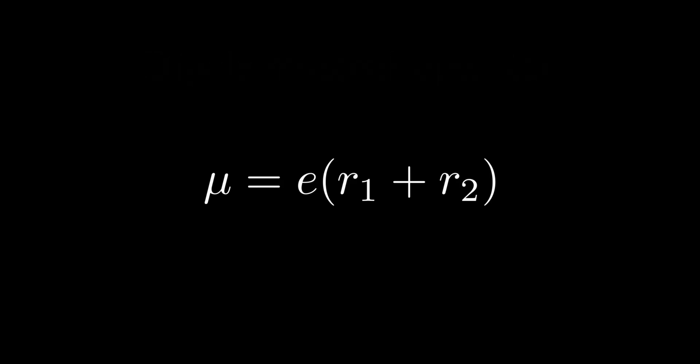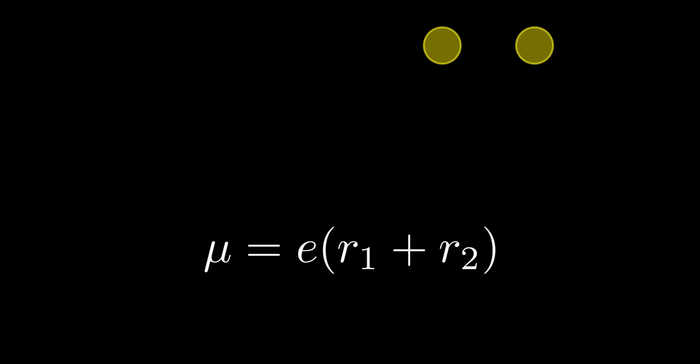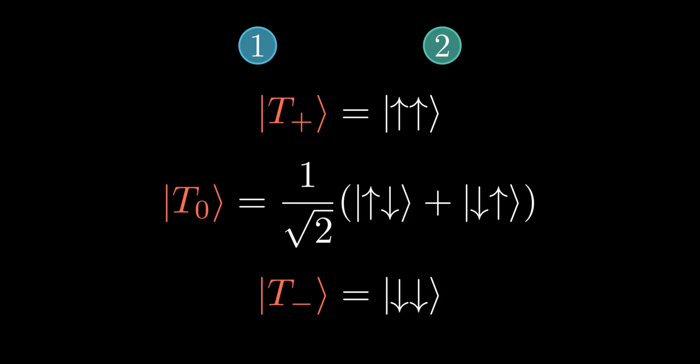Now consider what happens to the total spin state when we swap the labels on the two electrons. The dipole moment operator remains unchanged since the sum of the two distances stays the same. The triplet states remain unchanged upon the label swap. Singlet state becomes the negative of itself.